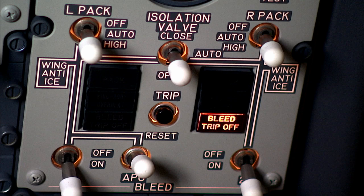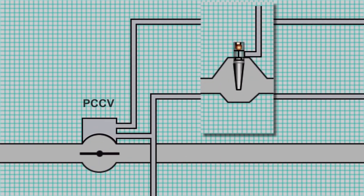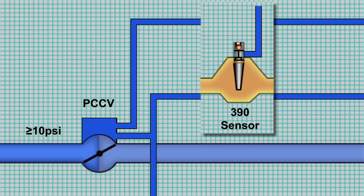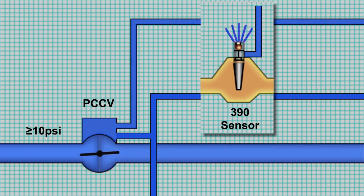Now that we've seen how the bleed air system controls pressure, let's see how it controls temperature. The pre-cooler is an air-to-air heat exchanger that uses engine fan air to cool the bleed air. The pre-cooler control valve, or PCCV, and the 390 sensor control fan air to the pre-cooler. When the engine starts, the PCCV is open. As the pressure rises above 10 PSI, the PCCV starts to close. As engine speed increases, so does the bleed air temperature. When bleed air temperature reaches 390 degrees Fahrenheit, the 390 sensor begins to open, reducing control air pressure and causing the PCCV to open. When the bleed air temperature reaches 440 degrees Fahrenheit, the sensor will be fully open, causing the PCCV to be fully open. As conditions change, the sensor will change the amount of control air vented, and the PCCV will open or close as needed.